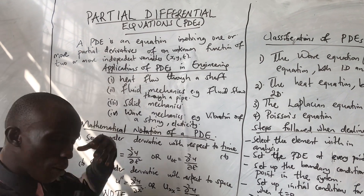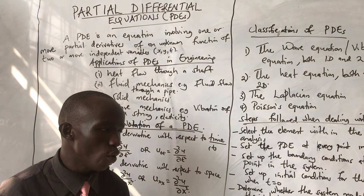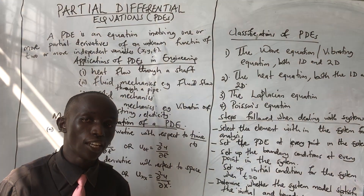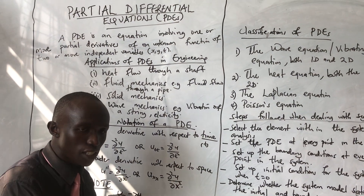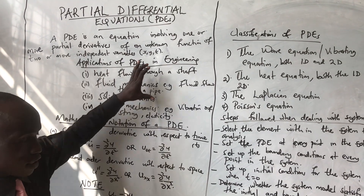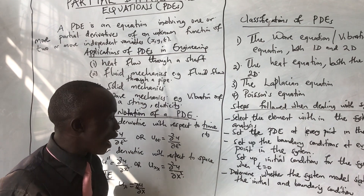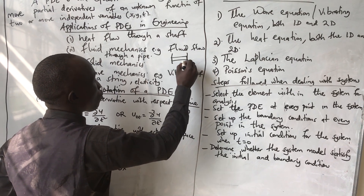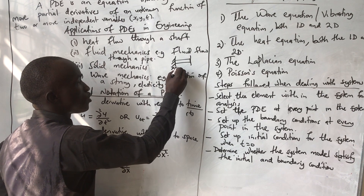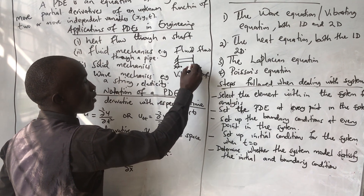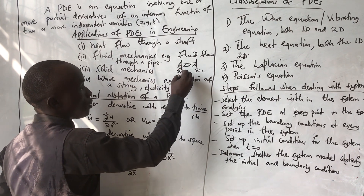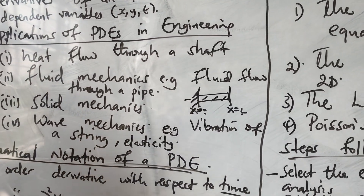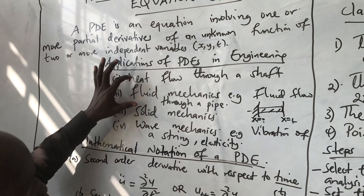Now let's understand the applications of PDEs in engineering. Number one, PDEs are used to analyze heat flow in a shaft. When heat is flowing through a metallic shaft, we can analyze how heat is flowing by setting boundary conditions and initial conditions — for example, when x is zero at one end and when x is L at the other end.